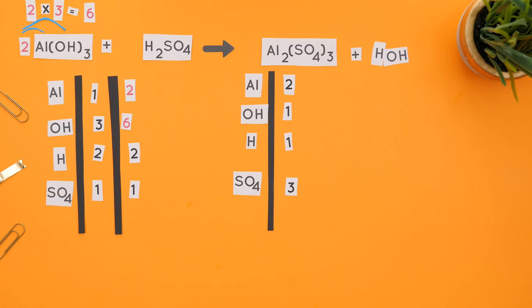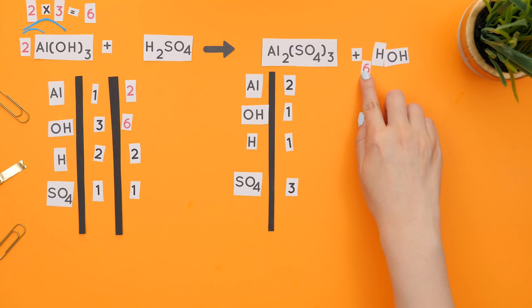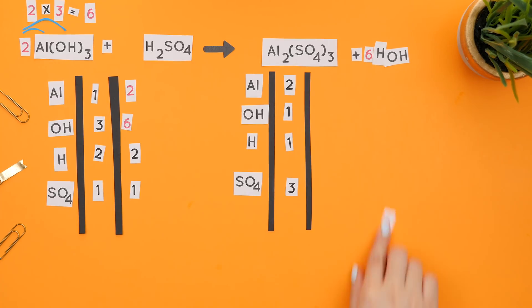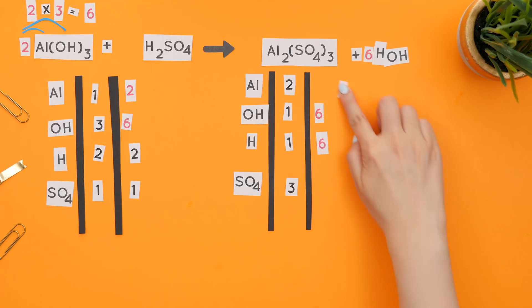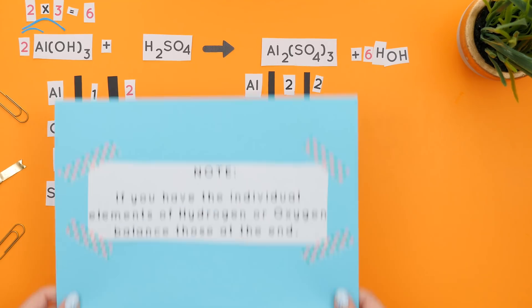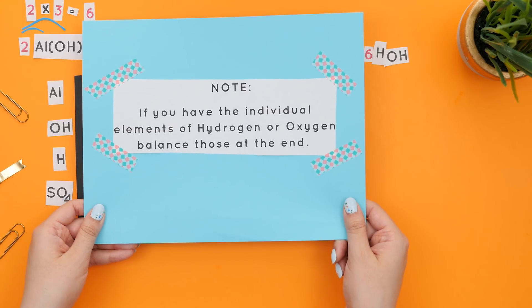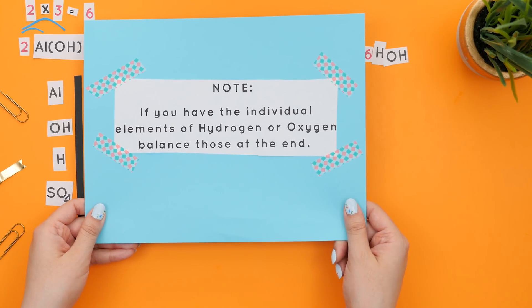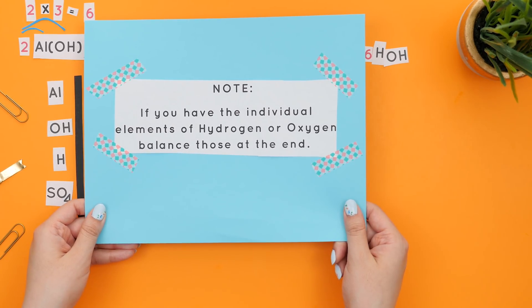To balance the OHs on the product side, we will put a six in front of water. We now have six Hs and six OHs. The aluminum and SO4 remain the same. Note, if you have the individual elements of hydrogen or oxygen, balance those at the end.